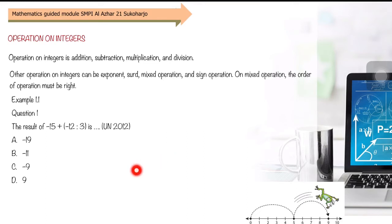Example 1.1, Question 1: The result of negative 15 plus negative 12 divided by 3. We work on what's in the brackets first. Negative 12 divided by 3 is negative 4. Negative 15 plus negative 4 equals negative 19. So the answer is A.